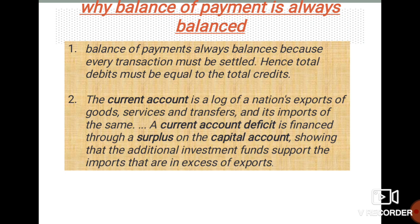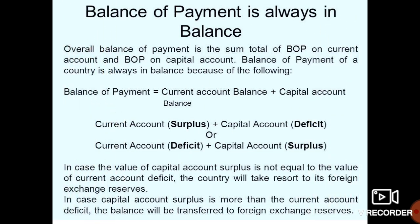Balance of payment equals current account balance plus capital account balance. If the current account is in surplus, then the capital account will be in deficit, and vice versa. So the two accounts offset each other to keep the balance of payment in balance.